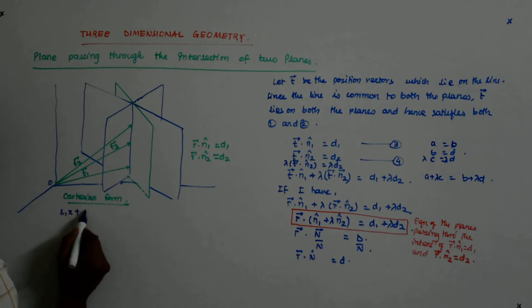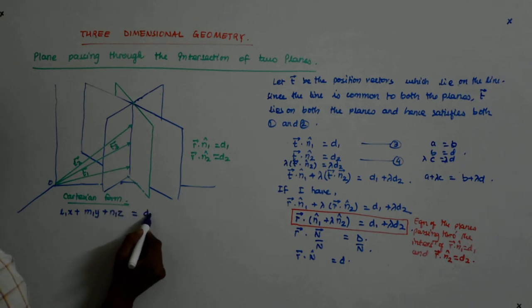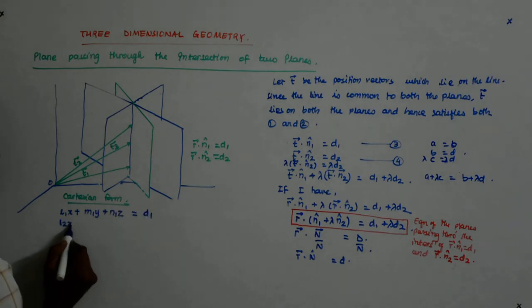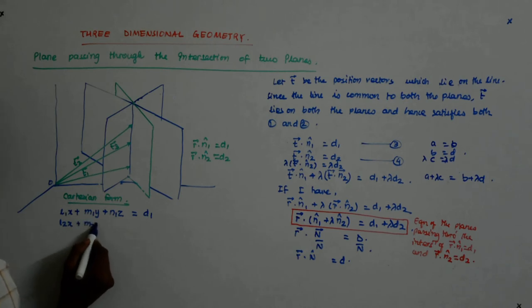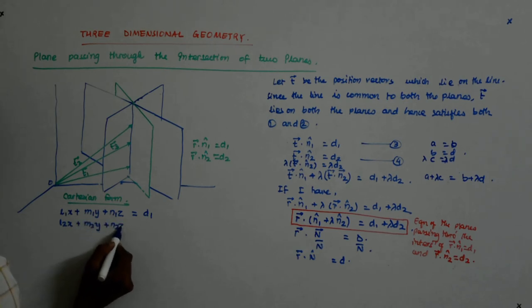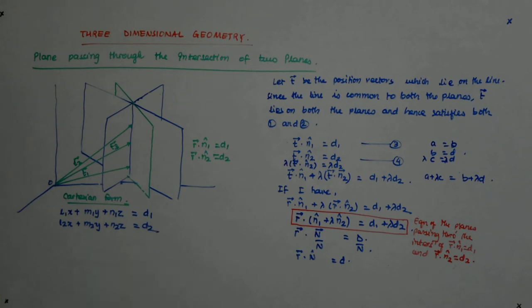So it is L1x plus M1y plus N1z is equal to D1 and L2x plus M2y plus N2z is equal to D2 and what did we do?